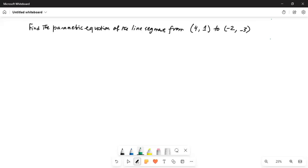It says, find the parametric equation of the line segment from (4, 1) to (-2, -3).